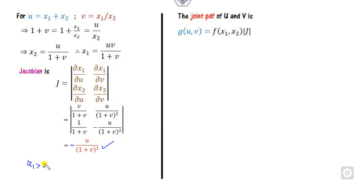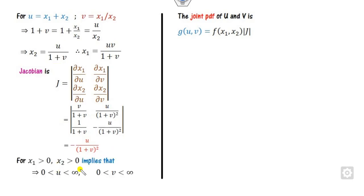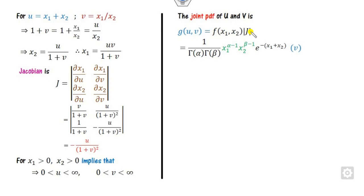Since x1 > 0 and x2 > 0, and given x1 = uv/(1+v) > 0 and x2 = u/(1+v) > 0, both u and v must be greater than 0. So the range of both u and v is 0 to infinity.